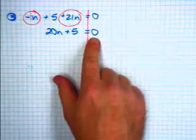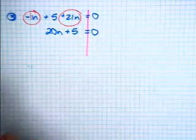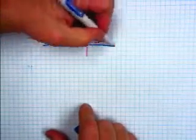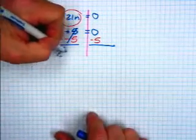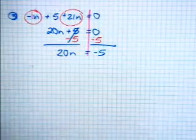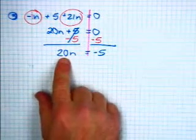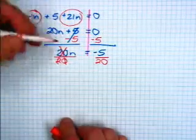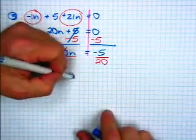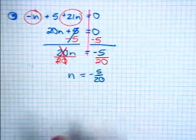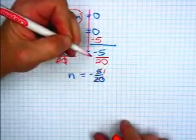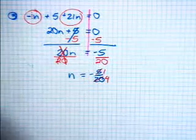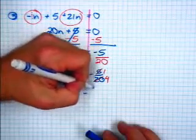That 0 shouldn't be confusing. We have to get rid of that 5, so we're going to subtract 5 from both sides. Those are gone, leaving us with 20n equals negative 5. Now we want to get n alone — we've got to get rid of the multiplication by 20 by dividing by 20. Those cancel, leaving n equals negative 5 over 20, which reduces to negative 1 fourth. That's our answer: n equals negative 1 fourth.